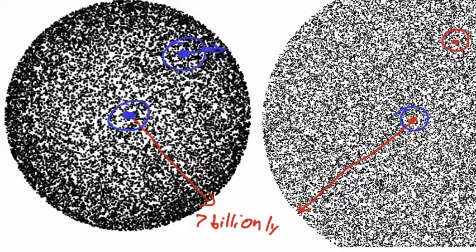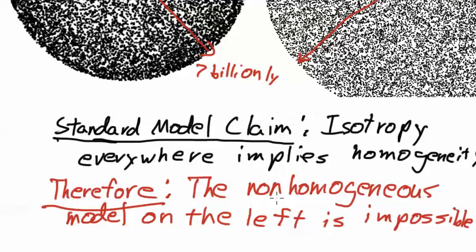Now that is essentially the argument used to say that this model is incorrect and this model is correct. So they say, therefore, the non-homogeneous model on the left is impossible.